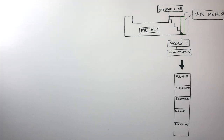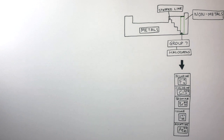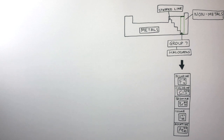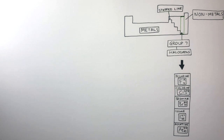Zooming in on Group 7, we can see fluorine is the first element, followed by chlorine, then bromine, then iodine, and finally astatine.